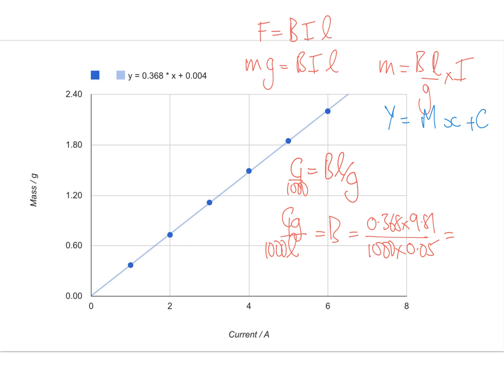of a centimeter and that should give us 0.07 of a tesla. Maybe I'll try and write that a little bit better. Seven of a tesla. And we should be getting results around about five times ten to the minus two tesla.